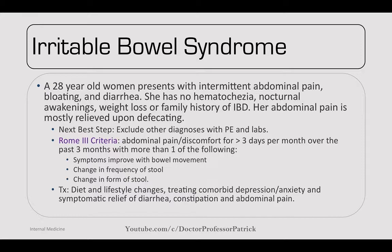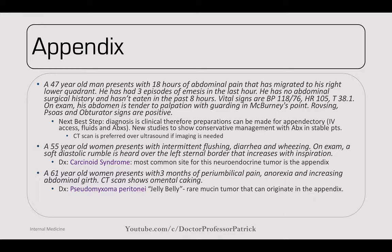Moving into the appendix — a 47-year-old man with 18 hours of abdominal pain migrated to the right lower quadrant. Three episodes of emesis, no surgical history, not eaten in 8 hours. Vital signs: HR 105, temp 38.1. Exam shows tenderness at McBurney's point (one-third distance between umbilicus and anterior superior iliac spine). Rovsing's, psoas, and obturator signs all positive. Next best step: diagnose clinically and prepare for appendectomy with IV fluids and antibiotics. New studies show conservative antibiotics in stable patients can be tried. CT scan preferred over ultrasound if imaging needed.